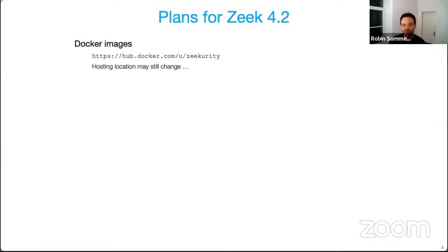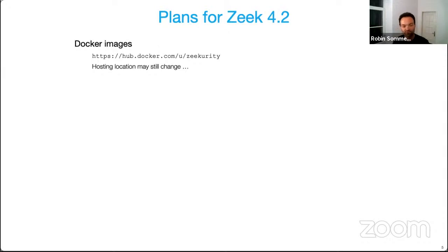We have just recently started to provide Docker images for Zeek, which essentially take Zeek itself plus the standard tools that come with a normal Zeek installation and pre-install them into a Docker image for everybody to use. We have a Docker Hub account — there wasn't much there other than Spicy so far. Right now there's a Zeek dev image providing the current nightly build, updated nightly, and in the future we'll also be pushing Docker images for releases. These Docker images are meant primarily for trying out Zeek — not for operational use. The hosting location may still change because Docker Hub unfortunately doesn't provide any free hosting for open source projects.